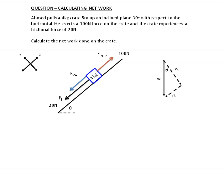To find F_wx, we draw a specific triangle where we draw the weight going down and look at theta — the angle on the right triangle. We have W_y which is perpendicular to the incline and W_x which is parallel to the incline. To work out W_x, we use W sinθ, which becomes mg sinθ because W equals mg. With a 4 kilogram mass, that's 4 × 9.8 × sin 30°, which gives us 19.6 newtons.